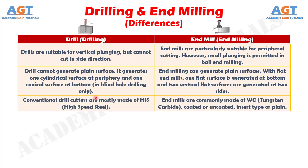Number seven: conventional drill cutters are mostly made of high-speed steel, whereas end mills are commonly made of tungsten carbide, coated or uncoated, insert type or plain.